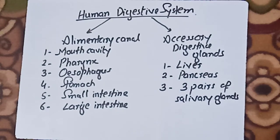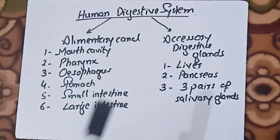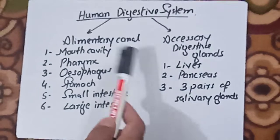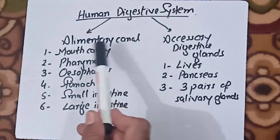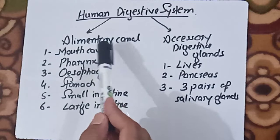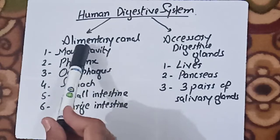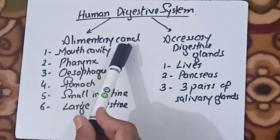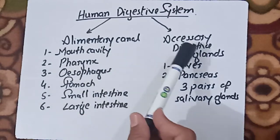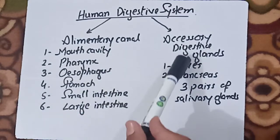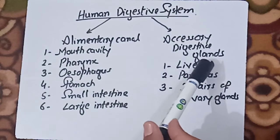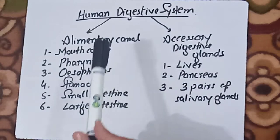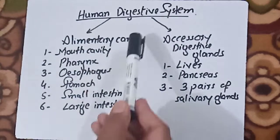Bismillahirrahmanirrahim. Welcome to Ali's Biology. In this video we will discuss the human digestive system. The human digestive system is composed of two main components: one is the alimentary canal, and the other is the accessory digestive glands.